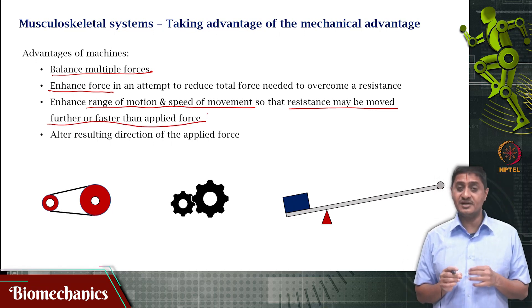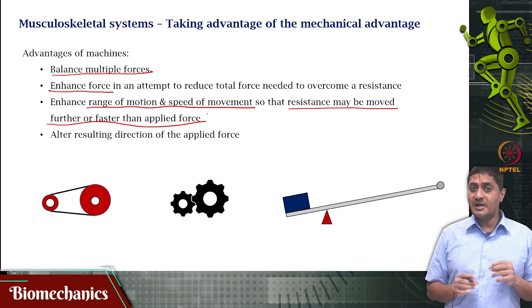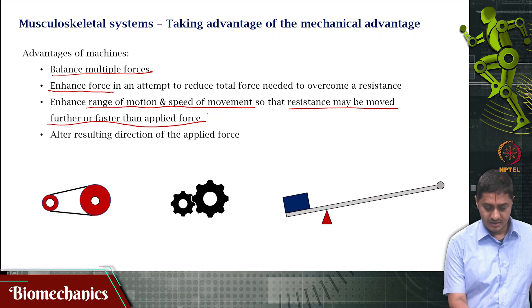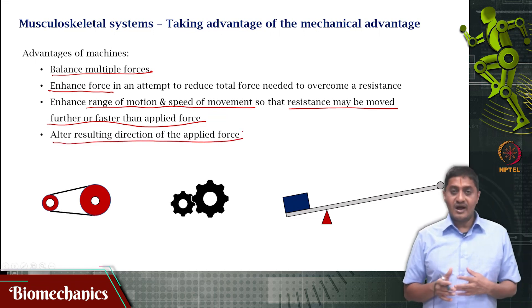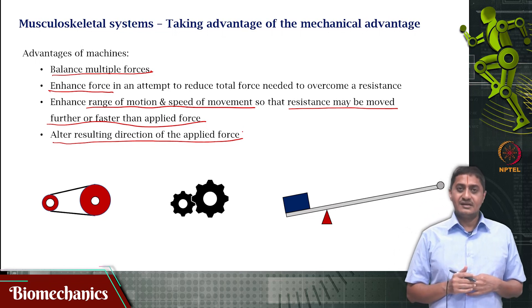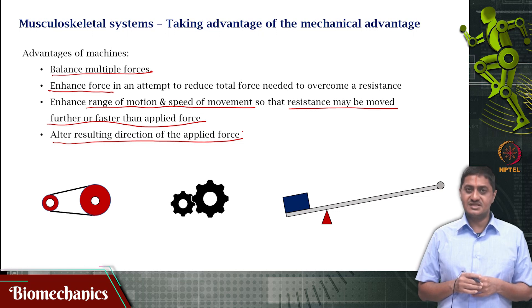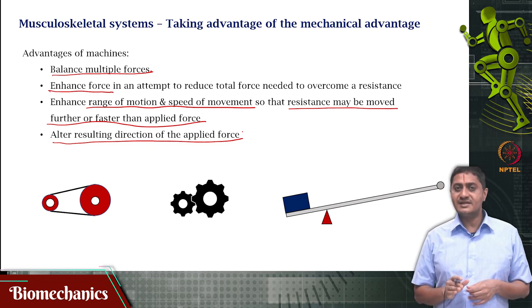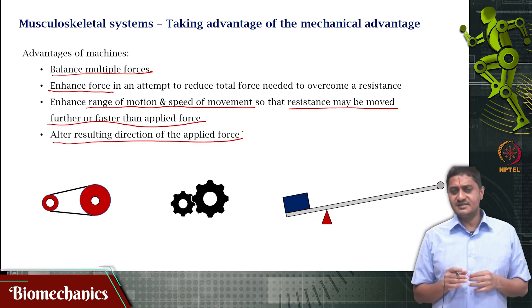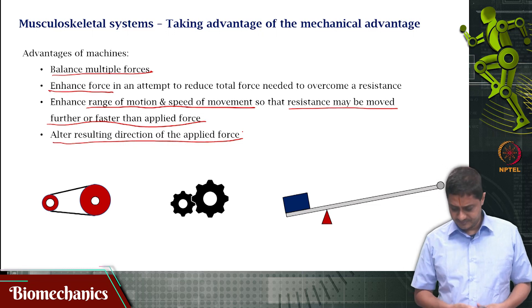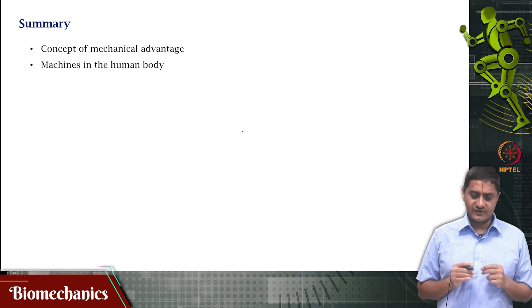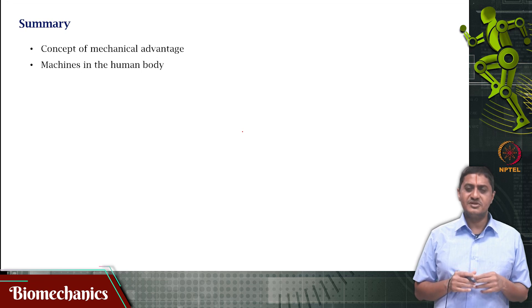Depending on the application and situation, there might be an amplification of force, or alternatively an amplification of range of motion and speed. Machines may also be used to alter or tweak the direction of the applied force, which many muscles accomplish depending on the case. Altering the force direction results in crucial changes in mechanics that affect the outcome. With this, we come to the end of this video — we saw what mechanical advantage is and examples of machines in the human body. Thank you very much for your attention.